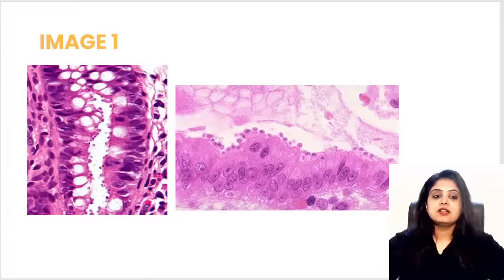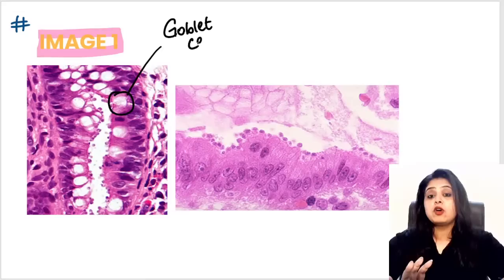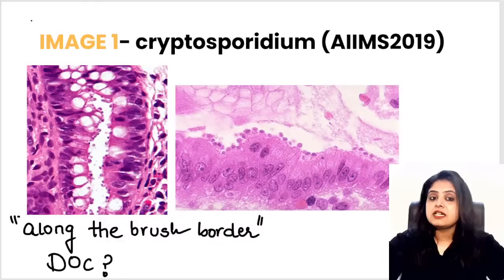Any queries regarding this seven-day free trial I can address at the end of the session. Let's get going. Previous year AIMS question — all-time favorite, all-time expected. Quick answer. I'm not telling you the organ because the organ is visible in this image. This happens to be the intestine, because I can see the presence of goblet cells. And the answer everyone's saying is Cryptosporidium.